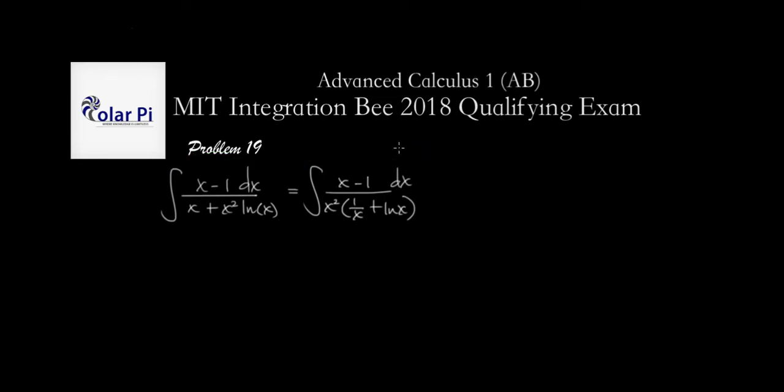We want to write it this way because in this factored version of the denominator, we're going to claim that this is equal to u. So yes, yet another u substitution problem on this qualifying exam. We let u equal 1 over x plus ln of x, and by doing that,